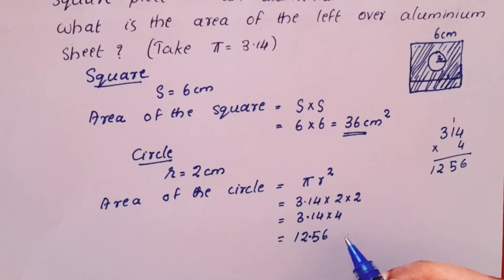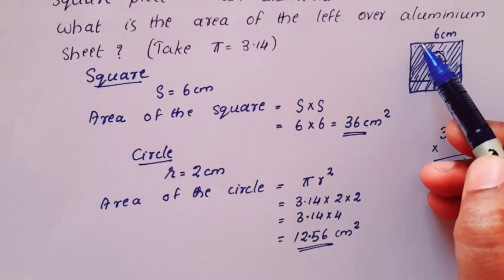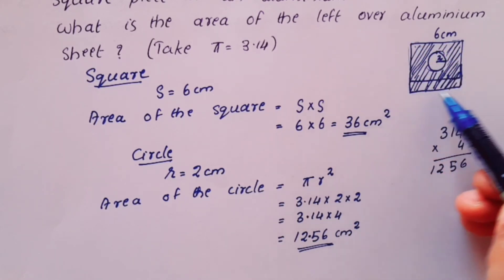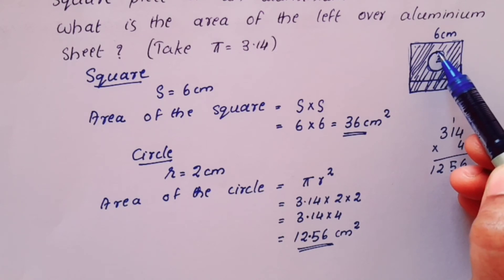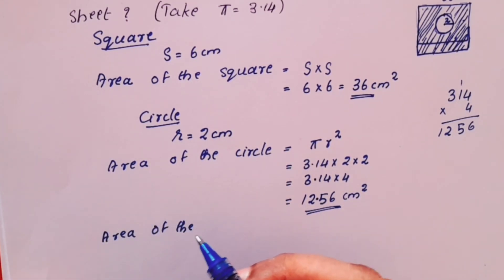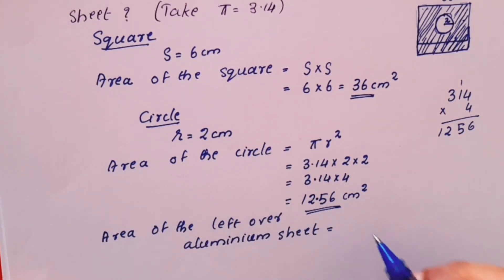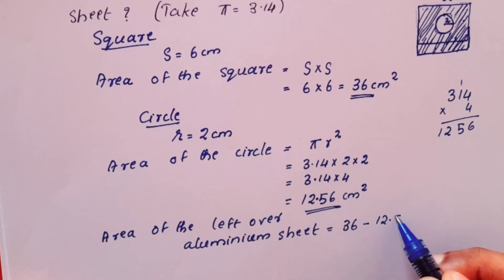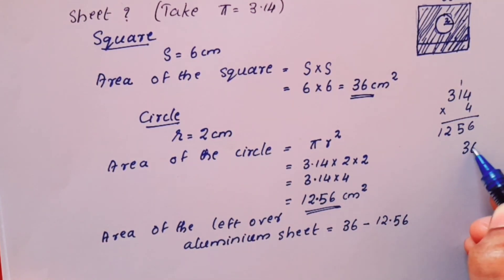To find the remaining area, we subtract. The area of the leftover aluminium sheet equals the area of the square minus the area of the circle: 36 minus 12.56.